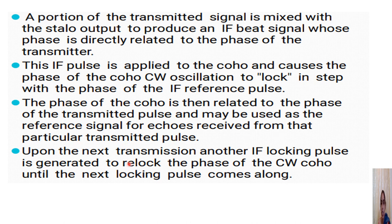Upon the next pulse transmission, another IF locking pulse will be generated, another IF beat signal will be produced, and it will again re-lock the phase of the CW coherent oscillator until the next locking pulse arrives. For each pulse, there is locking and phase adjustment so that the reference signal produced is related to the transmitted pulse and coherence is maintained.